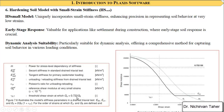Two additional parameters needed for the hardening soil small strain model are G0,ref — the reference shear modulus at very small strains, less than 10⁻⁶ — and γ0.7, which is the threshold shear strain at which the shear modulus G equals 0.722 G0. This was a short introduction about Plaxis software and constitutive models. I intend to make a more comprehensive tutorial about the different constitutive models, their suitability for specific applications, and their benefits and limitations. See you in the next lesson.